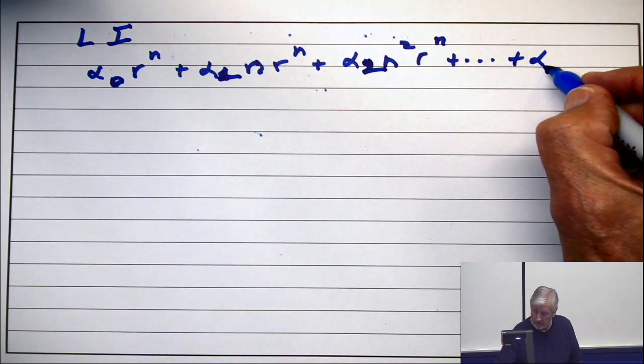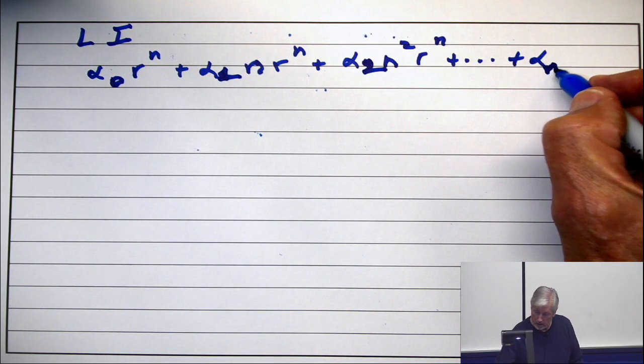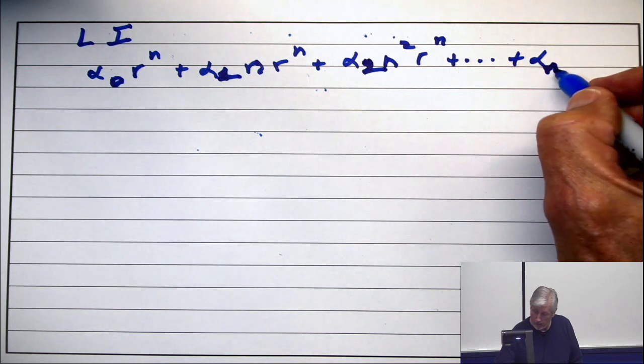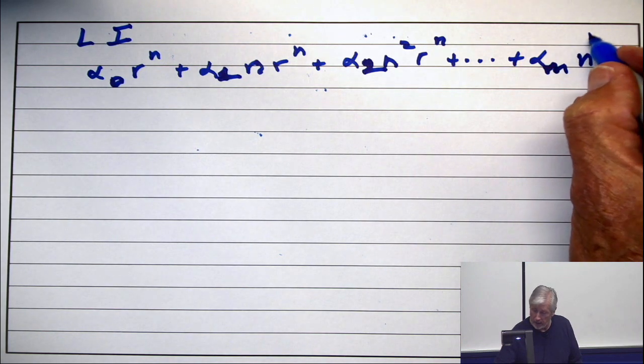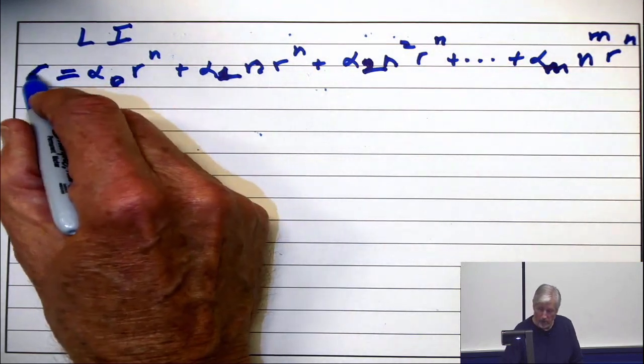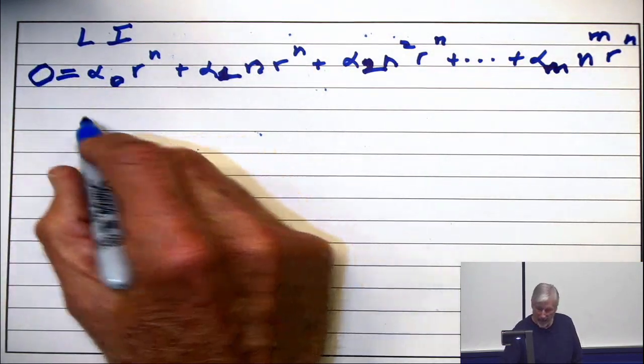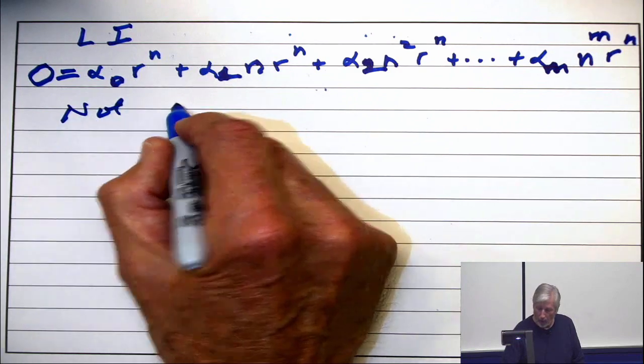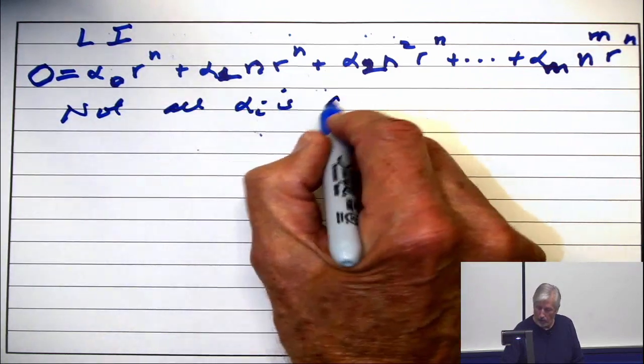Out to alpha, alpha m, n to the m, r to the n. Suppose this linear combination is 0, and not all alpha i's are 0.